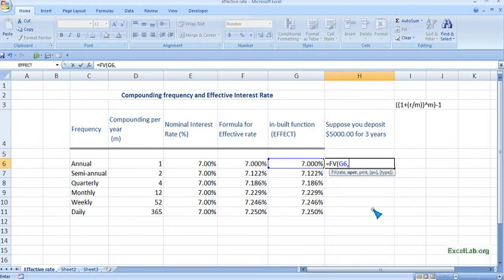PMT—you can ignore PMT since we are depositing once only. Next is PV. Put minus five thousand dollars because it is a cash outflow. Last, it is asking for type: when you are getting the interest—at the beginning or at the end of the period.